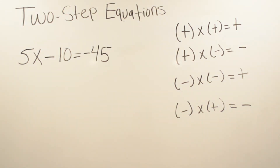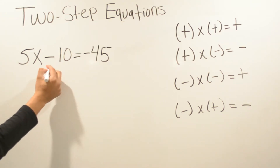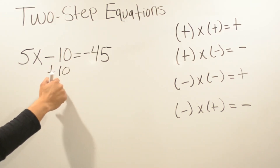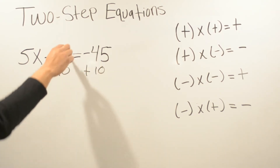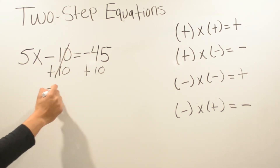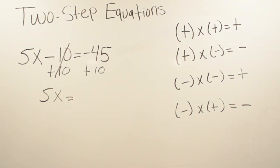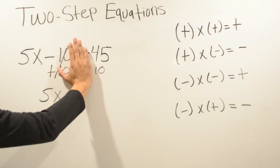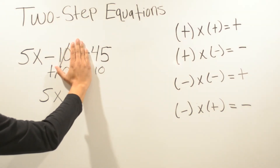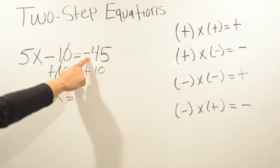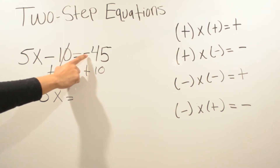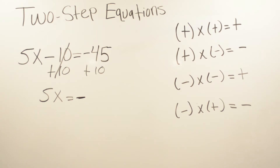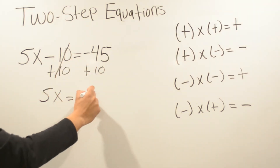This problem we have five x minus ten equals negative 45. We're going to get rid of negative ten first — the opposite of negative ten is positive ten. Whatever we do on one side of the equal sign, we have to do it on the other side to keep balance. This gets crossed out, leaving us with five x equals. We have a positive and a negative, so right away I cover the signs and ask which number is bigger: 45 or 10? 45 is bigger, and the sign in front of 45 is negative, so we know it's negative, and 45 minus 10 is going to be 35.